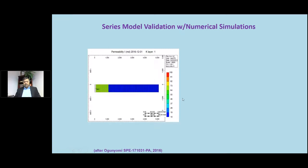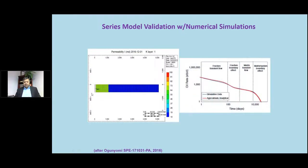We validated our semi-analytical solution against a numerical model. Here is the quality of agreement — they overlay completely. The initial flow period is governed by either bilinear or linear flow, and then we have a point of inflection that's important. If I have production history that shows this point of inflection, then we can predict the rest. That's something to keep in mind.